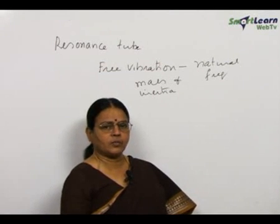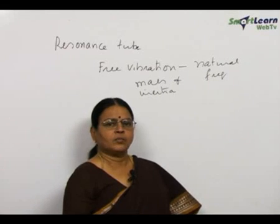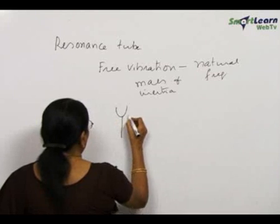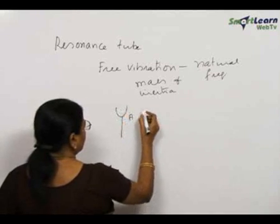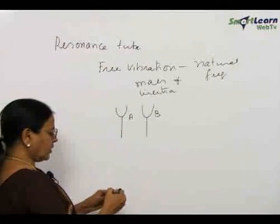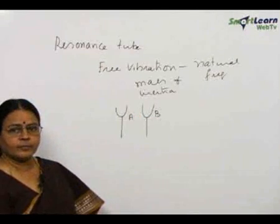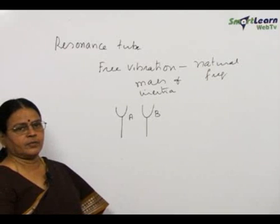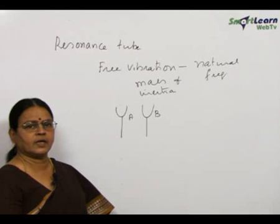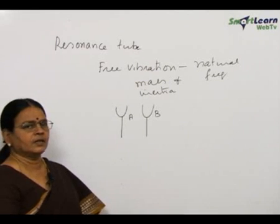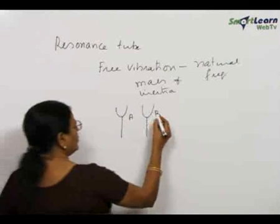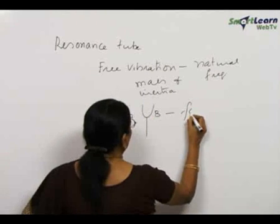We can make another body vibrate by means of an already vibrating body. For example, you can have a tuning fork A already vibrating. If you bring it near a tuning fork B, B will start vibrating. We are not directly making B vibrate — we excite tuning fork A and bring it near B, or bring it near a stretched wire like a sonometer. Then B vibrates under the influence of A, and B is said to undergo forced vibration.